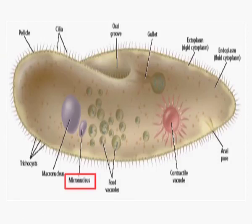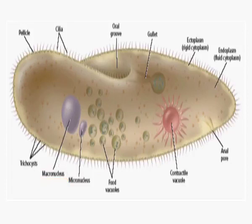A difference between Amoeba, Euglena, and Paramecium is that Paramecium contains two nuclei: the micronucleus and the macronucleus. The micronucleus is reproductive in nature, whereas the macronucleus is vegetative.